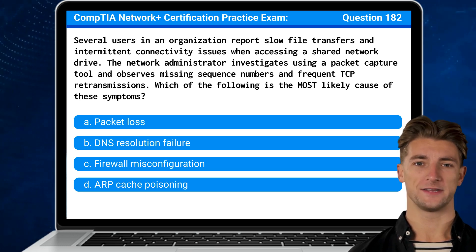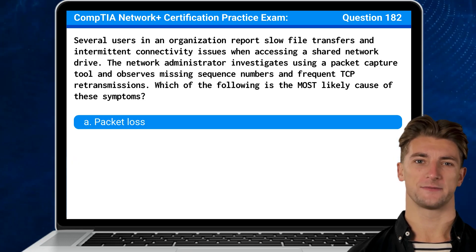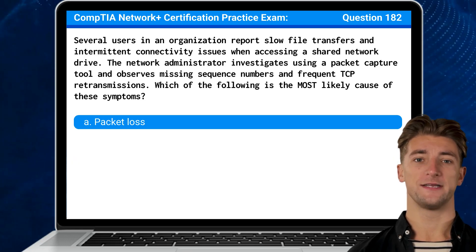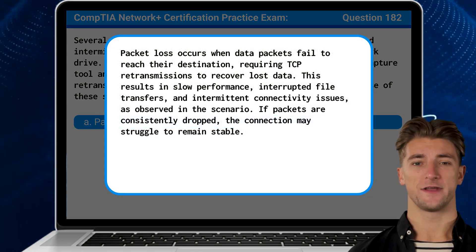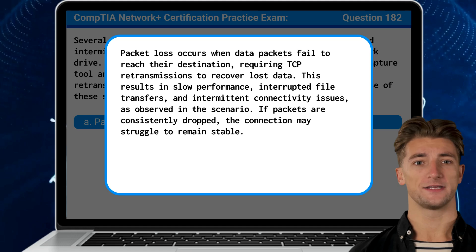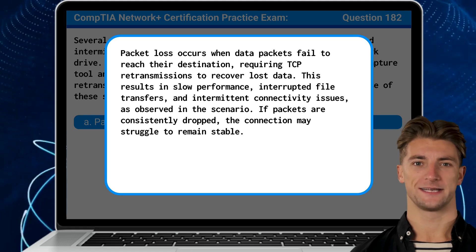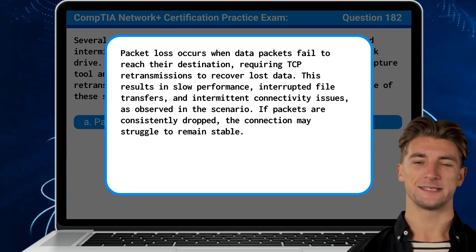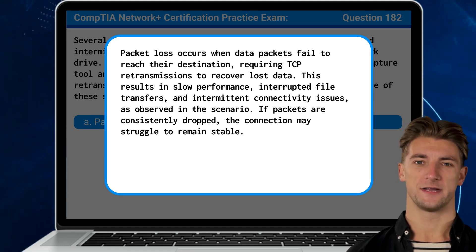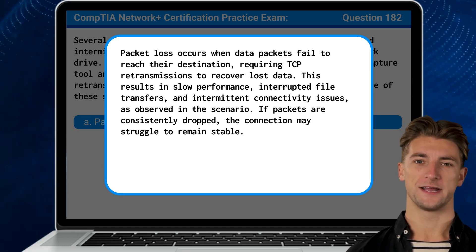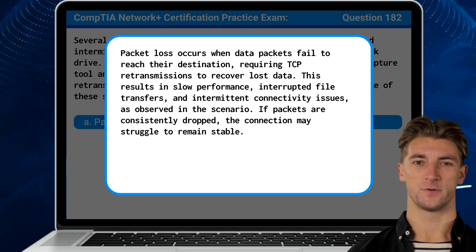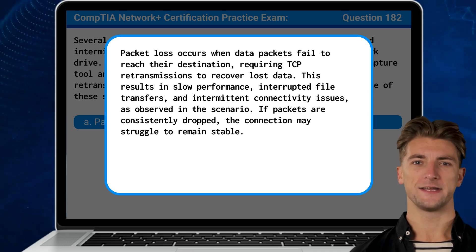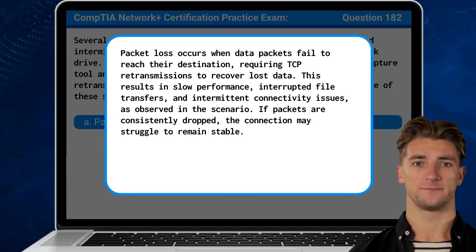The answer is A: Packet loss. Packet loss occurs when data packets fail to reach their destination, requiring TCP retransmissions to recover lost data. This results in slow performance, interrupted file transfers, and intermittent connectivity issues, as observed in the scenario. If packets are consistently dropped, the connection may struggle to remain stable.